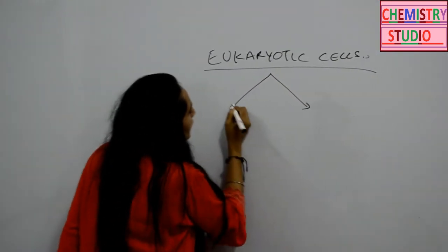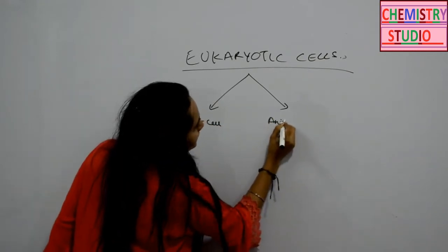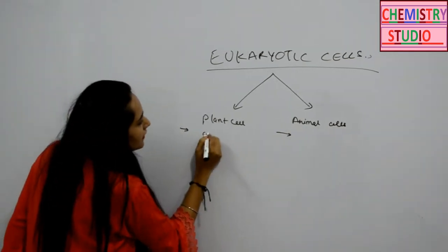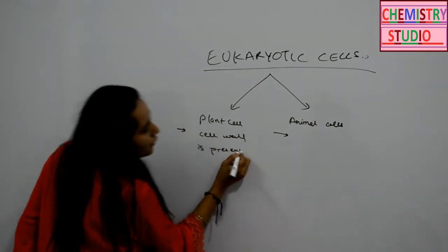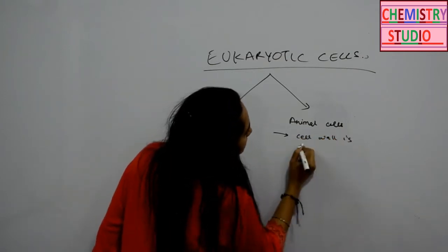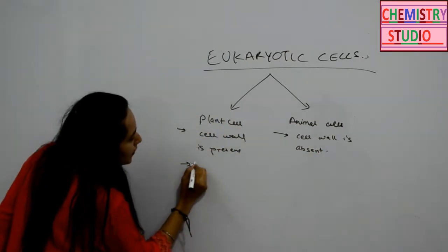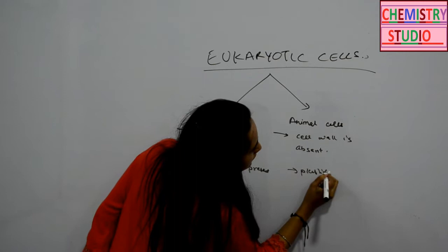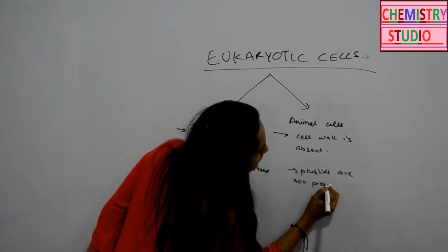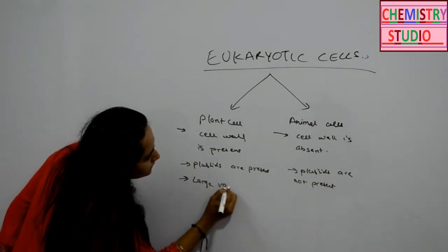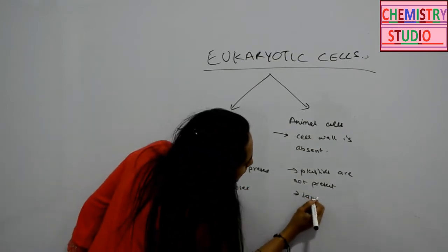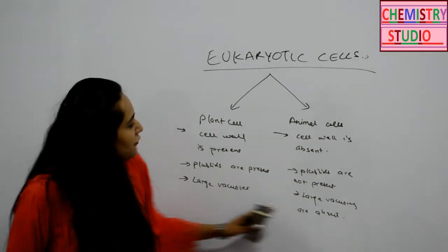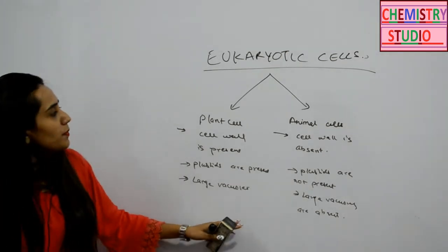We have plant eukaryotic cells and animal cells. The major difference between plant cells and animal cells is that the cell wall is present in plant cells. Also, plastids are not present in animal cells. Whereas in plant cells, we have large vacuoles that are present, while large vacuoles are absent in animal cells.